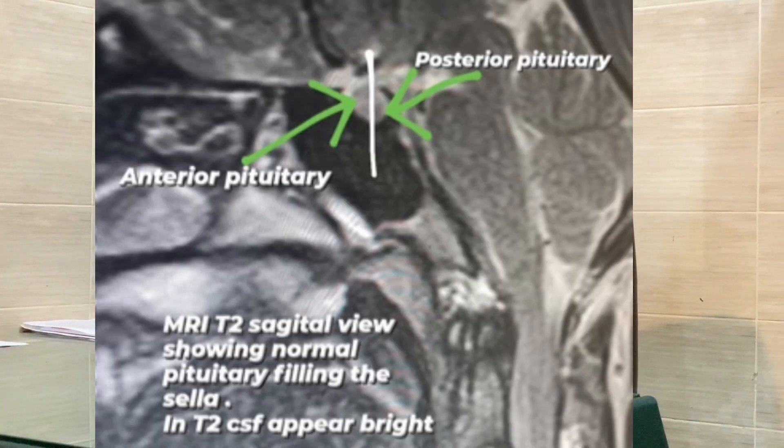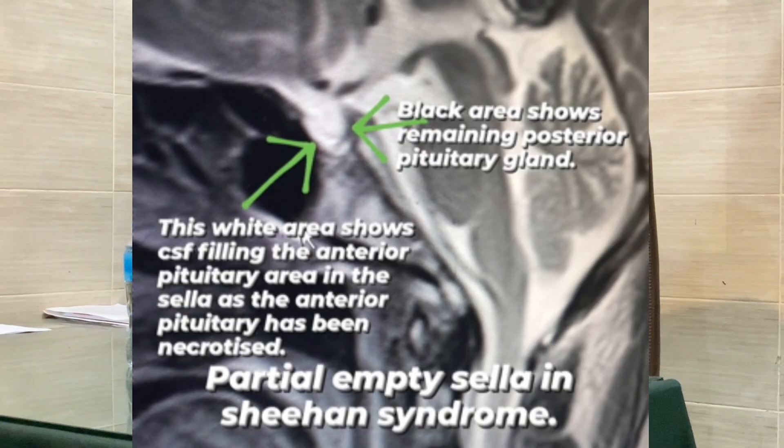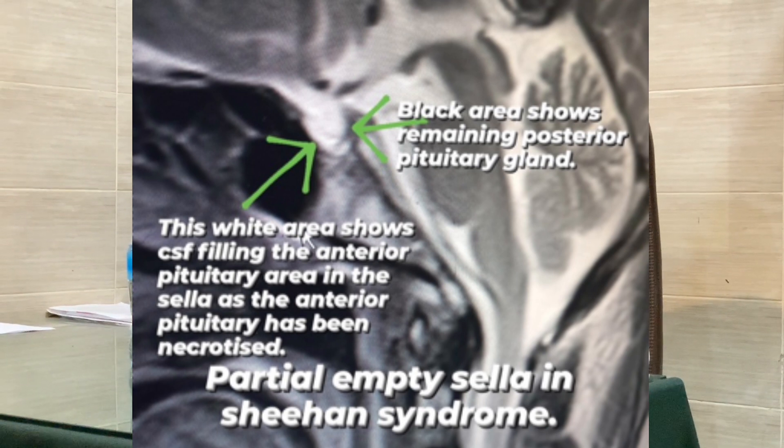When we did the MRI, the findings were astonishing. I will explain first the normal, then the abnormal. In a normal MRI, the anterior pituitary is full and contains tissue mass. In T2 images you may see CSF signal, but normally this CSF does not enter the anterior pituitary area. However, in Sheehan syndrome — where postpartum pituitary gland necrosis occurs — the CSF leaks into the anterior pituitary because that part of the gland has been destroyed, and only the posterior pituitary remains. We confirmed this case with MRI — it was Sheehan syndrome.